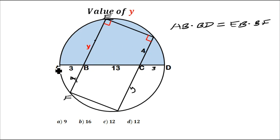Now AB is 3, and BD is 13 plus 3, which is 16. This equals EB, which is y (and that is what we are looking for), times BF.